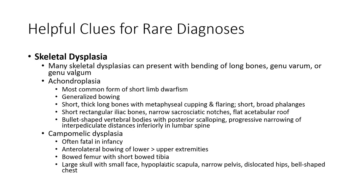Skeletal dysplasia: many skeletal dysplasias can present with bending of long bones, genu varum, or genu valgum. Achondroplasia is the most common form of short-limb dwarfism, with generalized bowing and short, thick long bones with metaphyseal cupping and flaring, short phalanges, rectangular edge bones, narrow sacrosiatic notch, flat acetabular roof, bullet-shaped vertebral bodies with posterior scalloping, and progressive narrowing of interpediculate distance inferiorly in the lumbar spine.